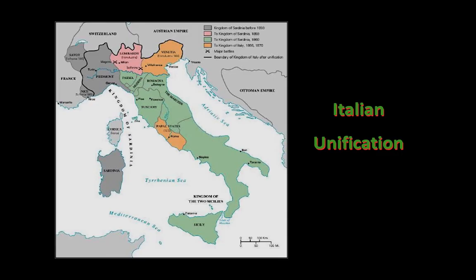This map — same map, slightly different view — shows Sardinia Piedmont unified in the north in gray, Lombardy coming in 1858, the green states representing the rest of Italy. Garibaldi started down at the tip with Sicily and marched his way up. The orange states come very late in 1866 and 1870. This will be an important map for you to use when you do your timeline — look at all those dates listed there.